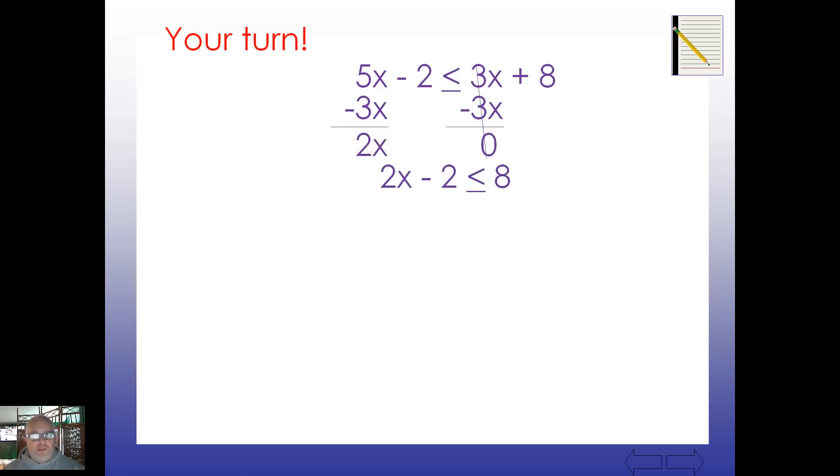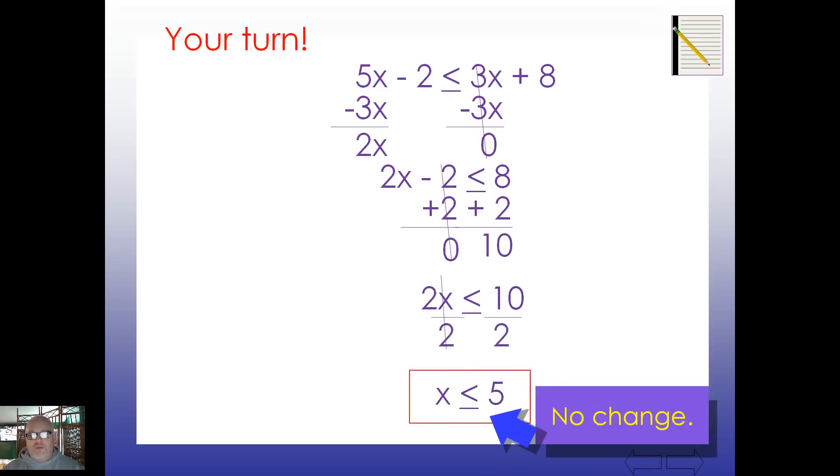Rewrite that, that says equation, it should say inequality. And we're going to end up adding 2 to both sides. And we end up with 2x is less than or equal to 10. Divide both sides by 2. And just like that, x is less than or equal to 5. As long as you pick a value for x that's 5 or less, you're good to go. And again, there's no change in our sign there.